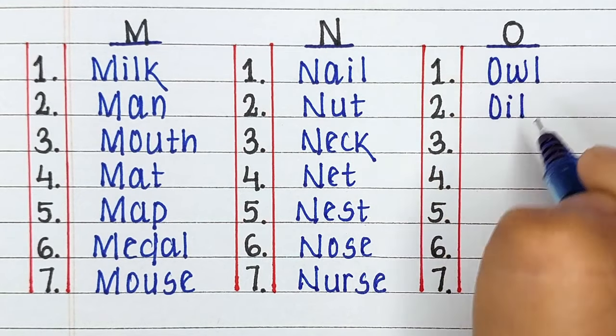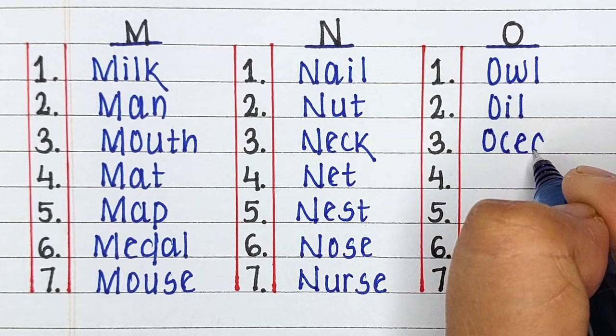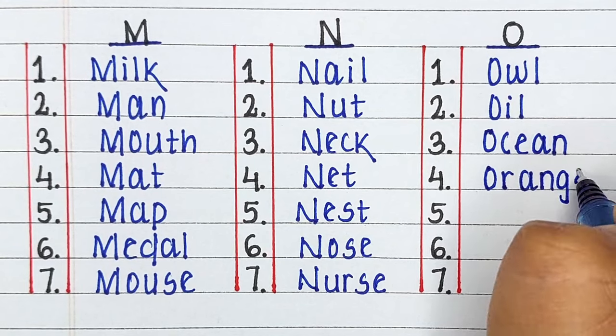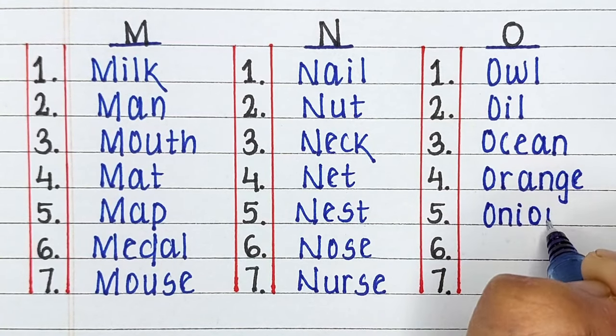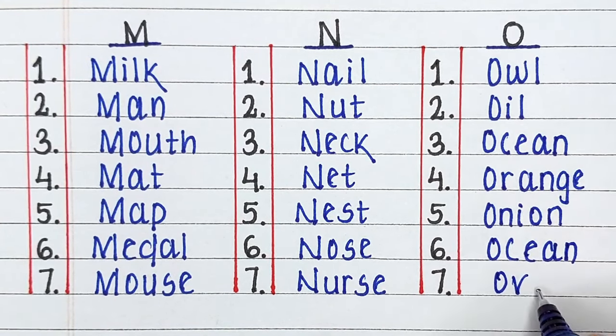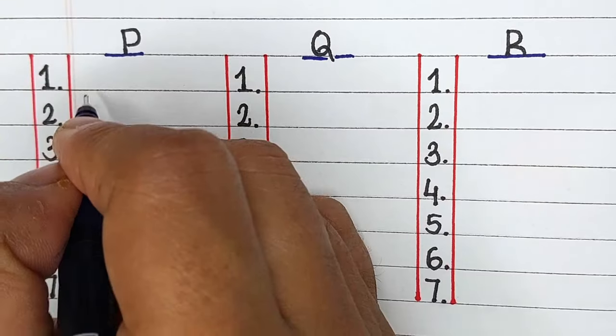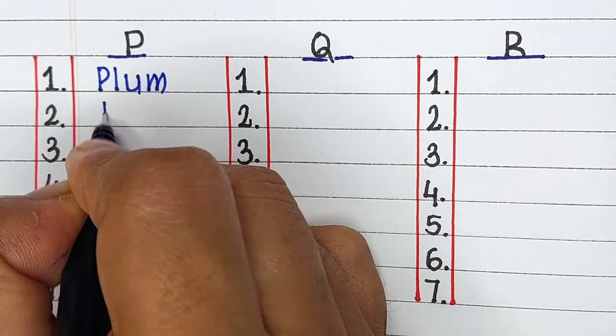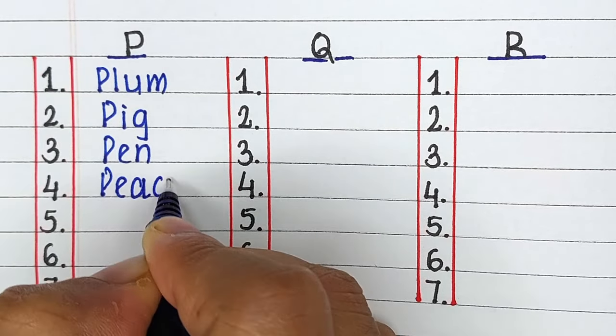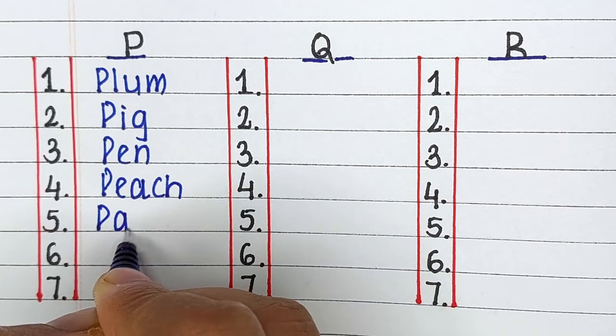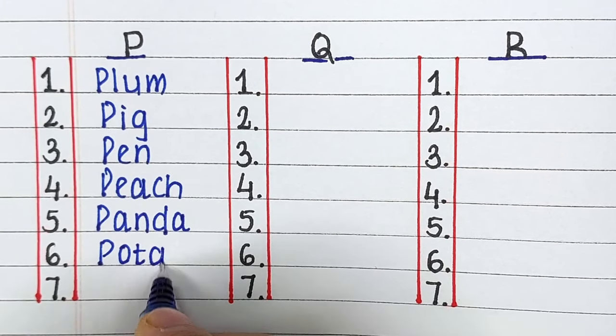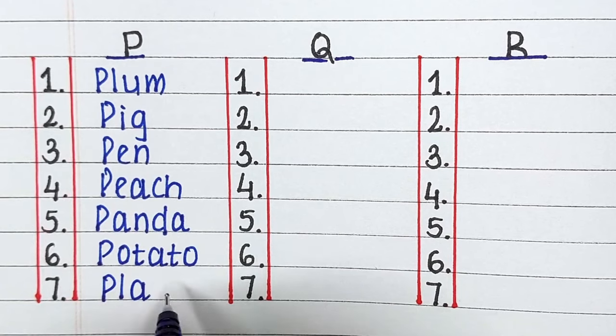Next up we have Alphabet O. The words starting from letter O are Owl, Oil, Ocean, Orange, Onion, Oven and Ox. Next up we have Alphabet P. The words starting from letter P are Plum, Pig, Pen, Peach, Panda, Potato and Planet.